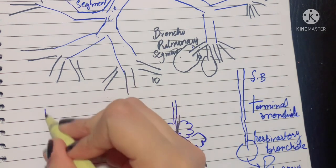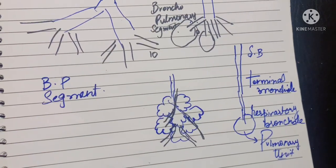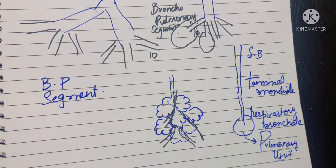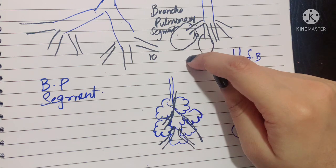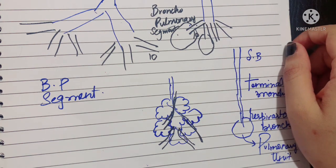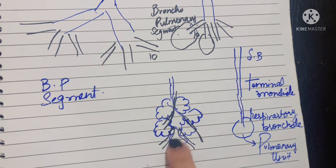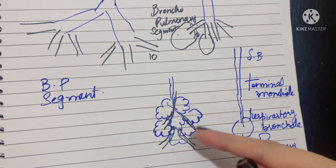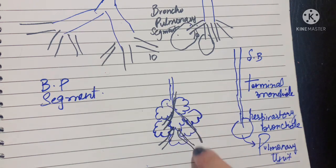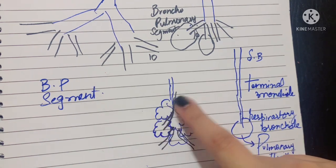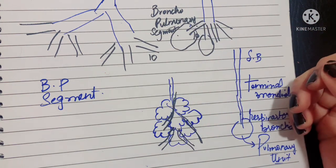The bronchopulmonary segment is defined as a well-defined anatomic, functional, and surgical sector of the lung, which has its own segmental bronchi, segmental artery, lymphatics, and autonomic nerves. Each bronchopulmonary segment is pyramidal in shape with its apex directed towards the root of the lung. The segmental venules lying in the connective tissue between adjacent pulmonary units are used by a surgeon to carry out a segmental resection to isolate a particular bronchopulmonary segment.